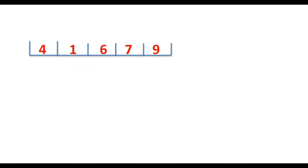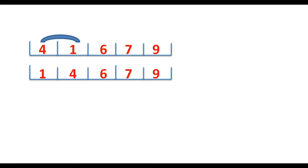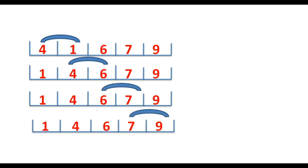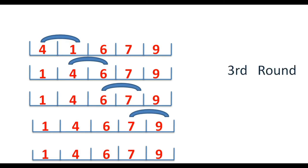In the last round, 4 and 1 will be compared — since 1 is less than 4, we swap 1 and 4. The remaining adjacent elements in the next passes are already in place, so we don't need to swap them. Finally, at the end of the third round, our sorted array is going to be 1, 4, 6, 7, 9.